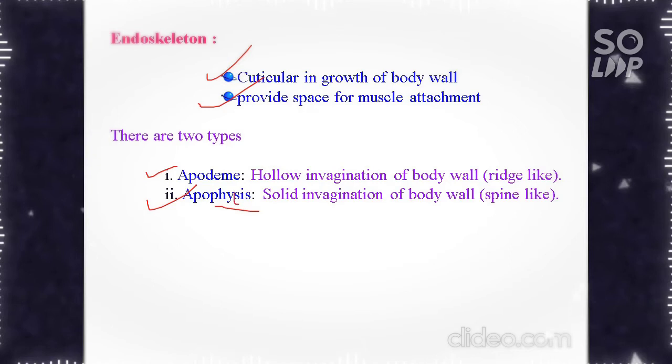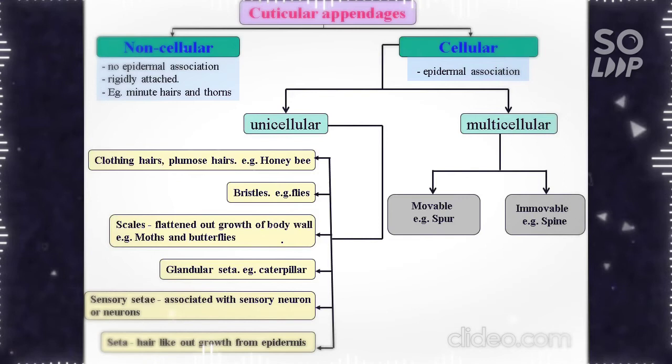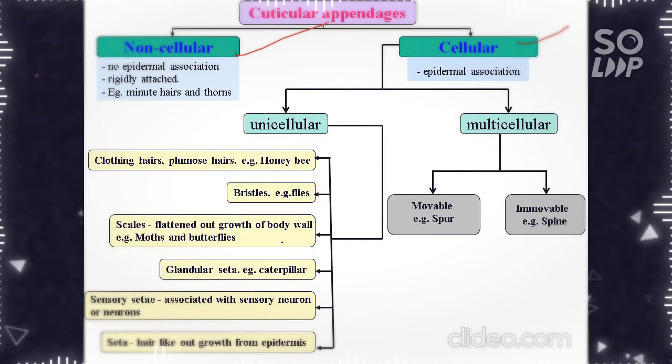Apophysis is a spine-like solid invagination of the body wall. You can remember there are two S's in apophysis: spine-like solid invagination. Then the cuticular appendages are of two types: non-cellular and cellular.